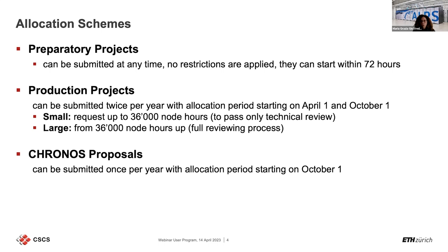Rather than coming out with a proposal that will be rejected because the technical report is not properly done, we strongly recommend you apply for a preparatory project. Exceptionally, it takes longer than a couple of days to go through and approve preparatory applications. Then we have the production project with starting periods on April 1st and October 1st. We also offer a smaller allocation, but it is very restrictive — read the webpage carefully for the rules. Then we have the annual Chronos call for proposals.